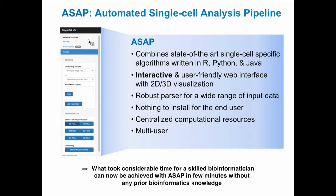What is the ASAP pipeline? It combines state-of-the-art single-cell specific algorithms written in R, Python, and Java. It is meant to be very interactive and user-friendly with a web interface featuring 2D and 3D visualization. It has a robust parser for a wide range of input data. Nothing needs to be installed for the end user. It has centralized computational resources and is a multi-user platform. What took considerable time for a skilled bioinformatician can now be done in a few minutes without any prior bioinformatics knowledge — though experienced bioinformaticians will of course go much further in their analyses.